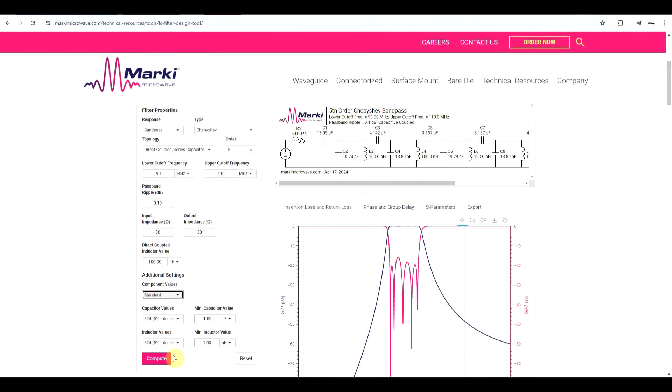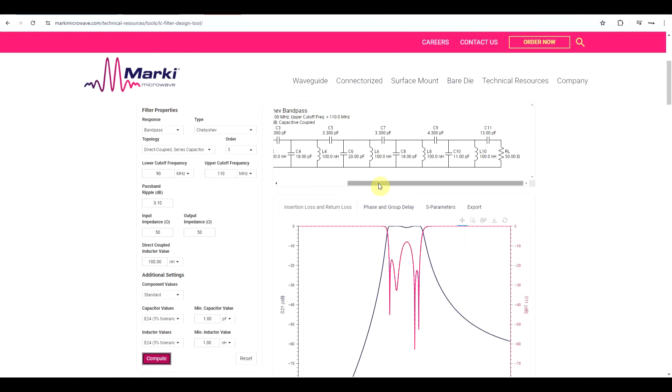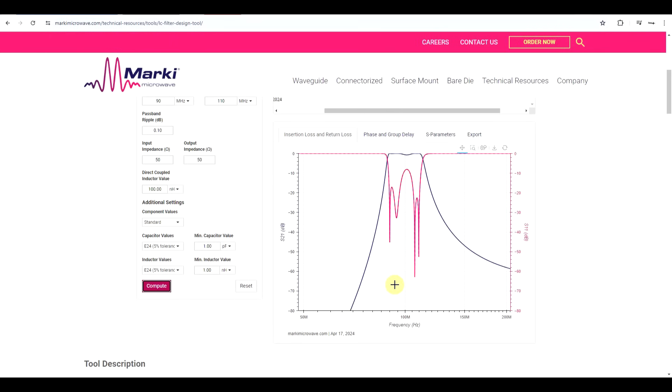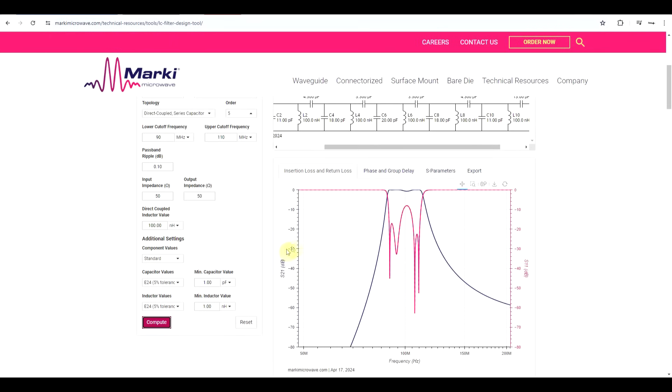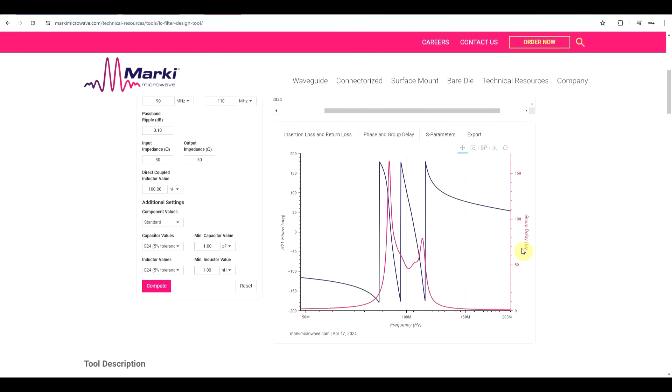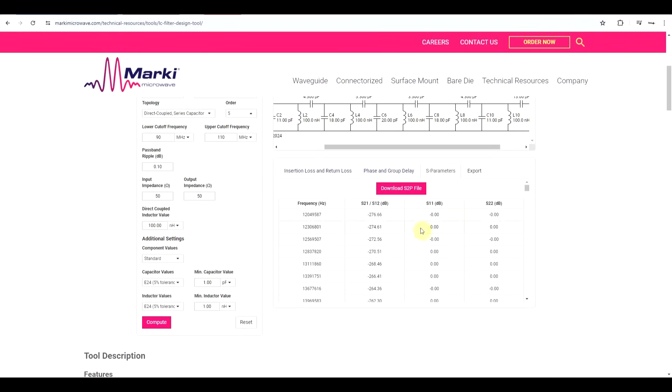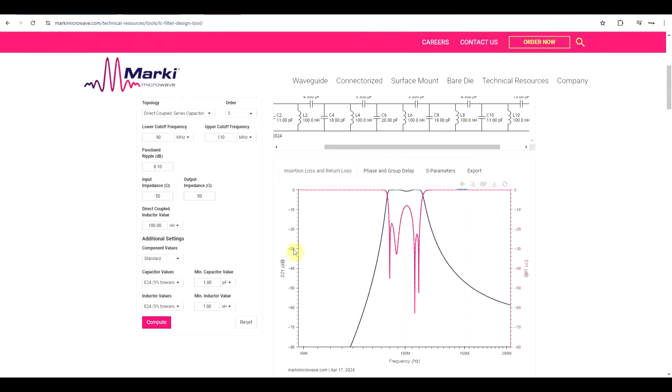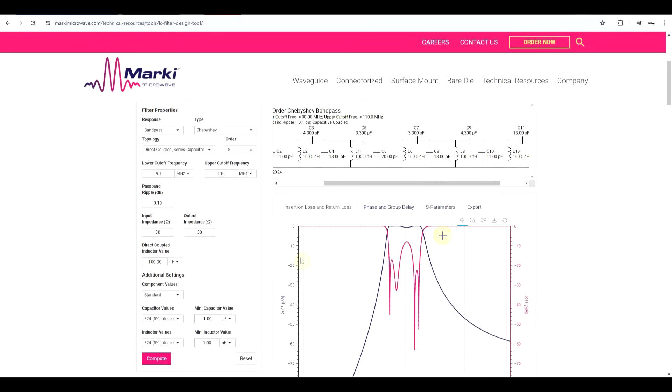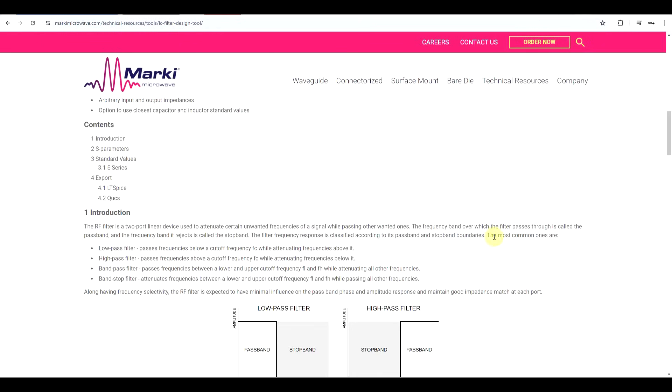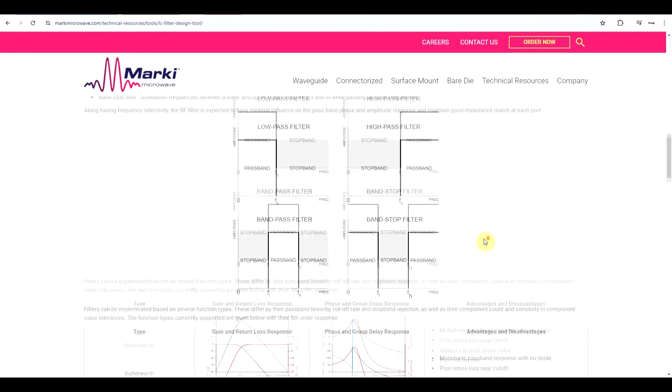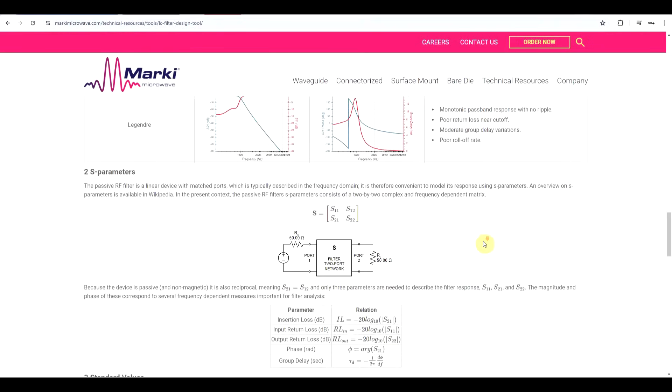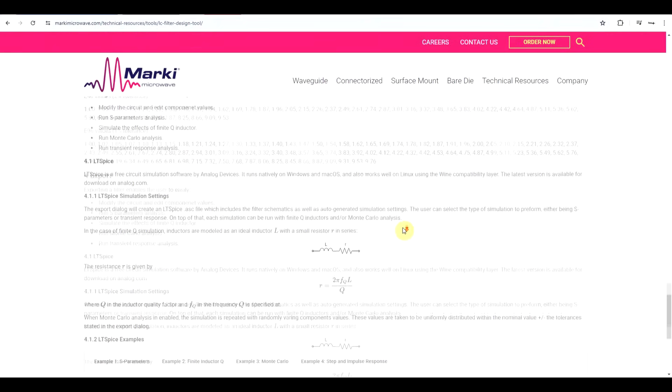Once all of the parameters are set up, you just hit compute, and you get the exact filter schematic for the chosen parameters. On the bottom side, you have various characteristic curves. First of all, you have the S11 and S21 parameters, so your insertion loss and return loss. You can observe the phase and group delay. You can export your touchstone description of the circuit. And finally, you also have the option to export it as a circuit for either LTSpice or Qucs. And if you run into any troubles, there is quite an extensive explanation section on the bottom side regarding how the tool works and what the various settings mean. So this is quite a good theoretical support for the application of designing filters.